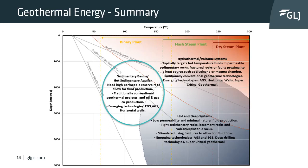To summarize geothermal energy, we can plot everything on a temperature versus depth chart. This shows our different geological settings — sedimentary basins, hydrothermal volcanic systems, and hot and deep systems — along with what type of plants can be used and how they fit in the geothermal gradient spectrum. Sedimentary basins have a lower geothermal gradient than volcanic systems and require greater depth, showing how they relate to the other systems.